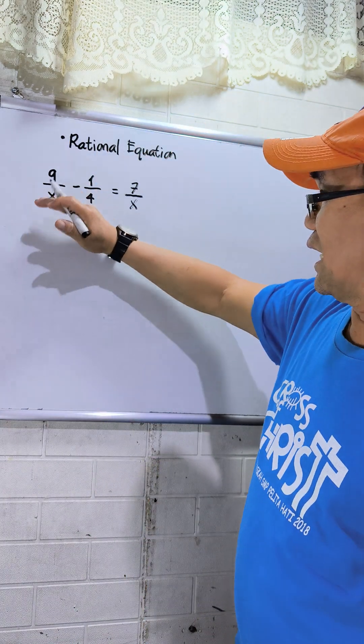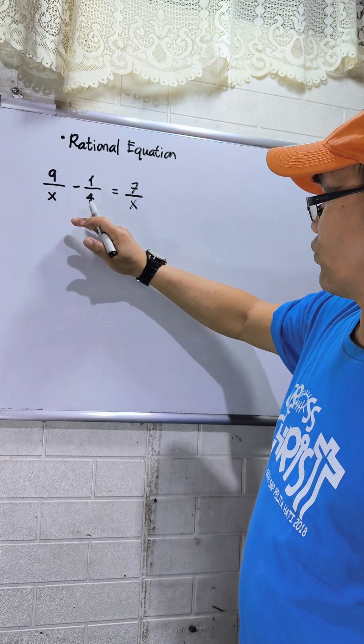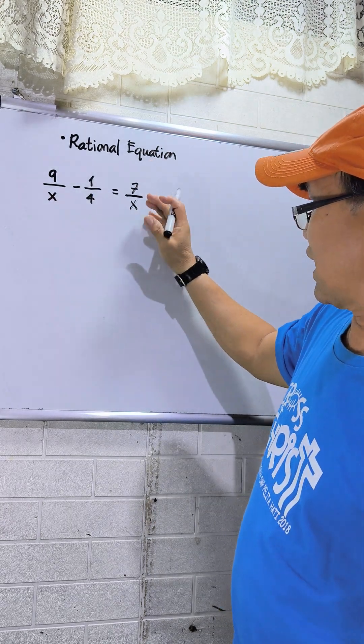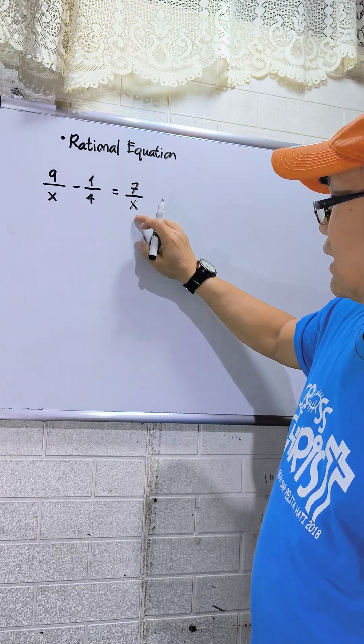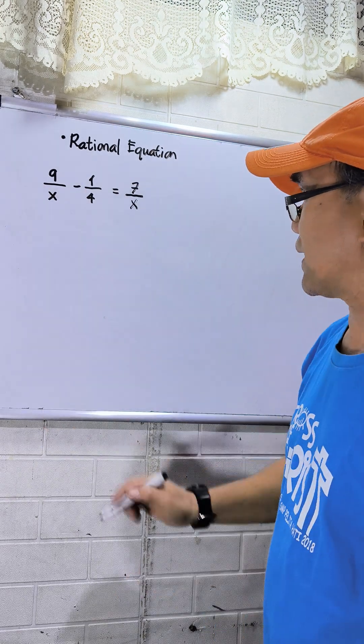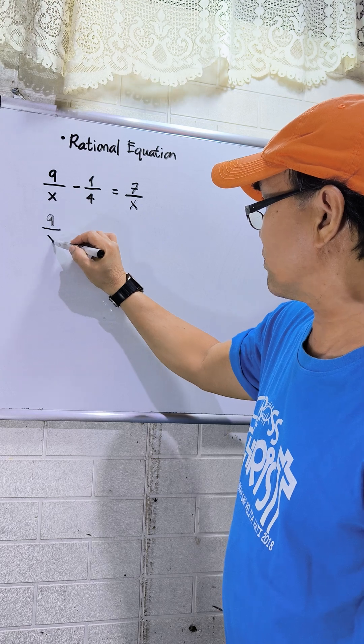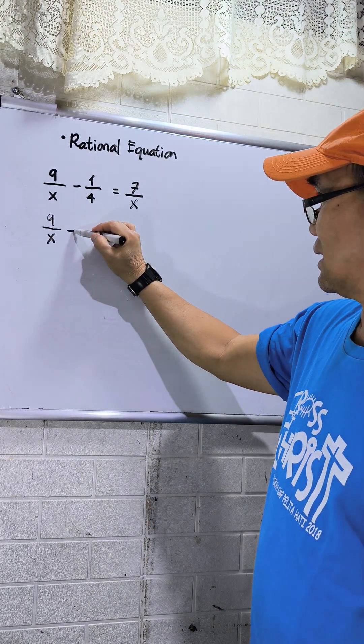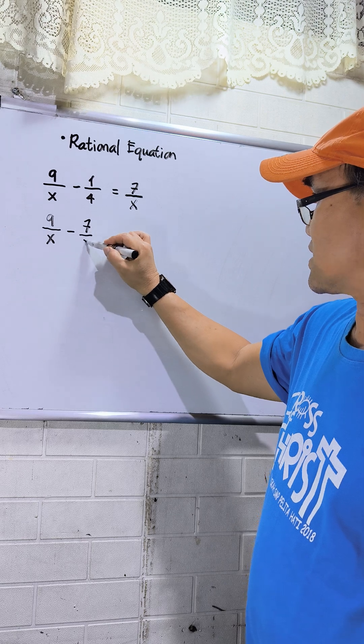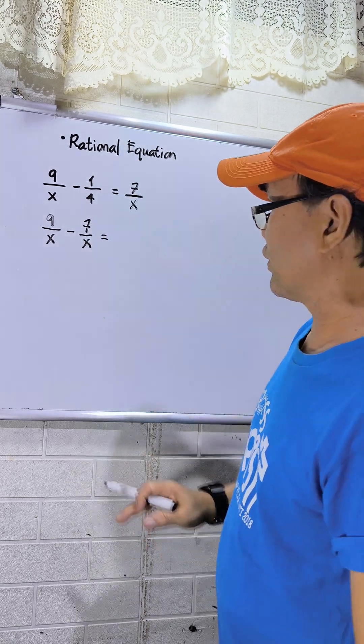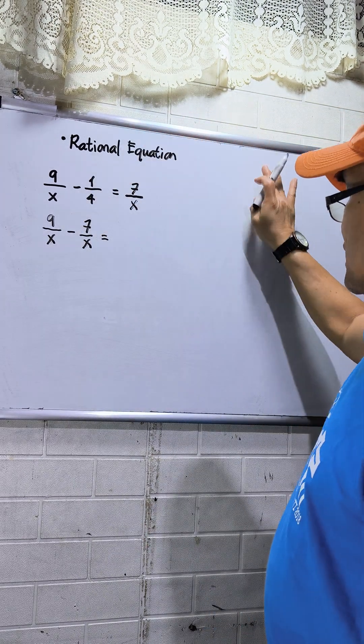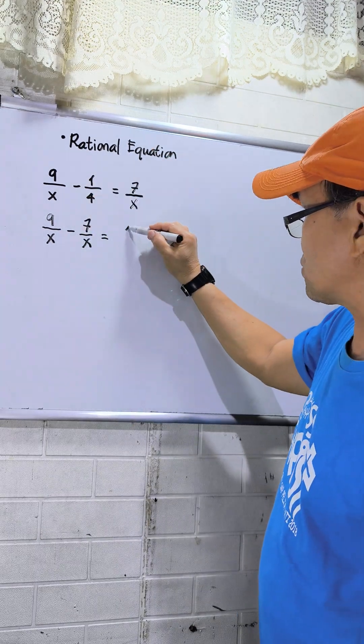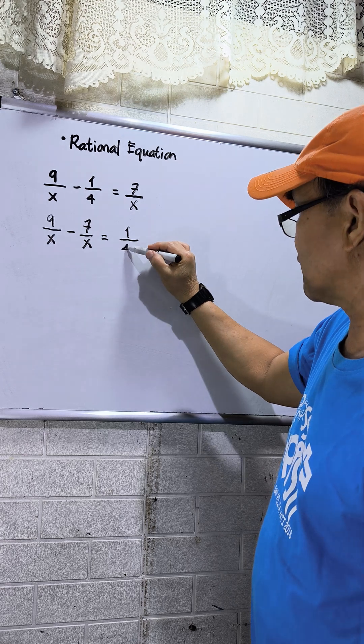So I have here 9 over x minus 1 over 4 equals 7 over x. Since 7 over x has a variable, I will place this one at the left side. So this will be 9 over x, then I will transpose at the left side, so this will be minus 7 over x. Then this 1 over 4, that will be constant, should be placed at the right side. Since this is negative, if we transpose at the right side, this will become positive 1 over 4.